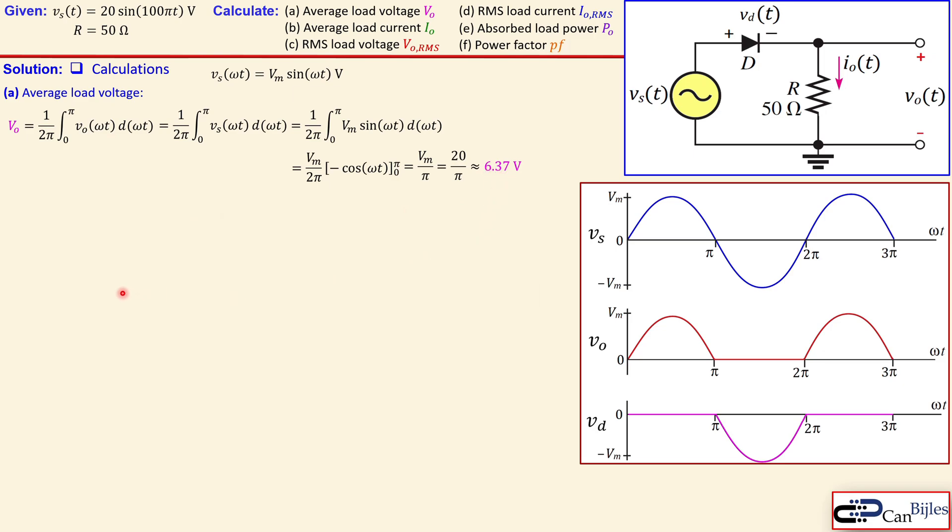The average load current is now very simple because you just use Ohm's law. So voltage over the resistor: we know Vm over π was our expression, which is 20 over π over 50 because that's the resistor. So you get here approximately 127.3 milliamps.